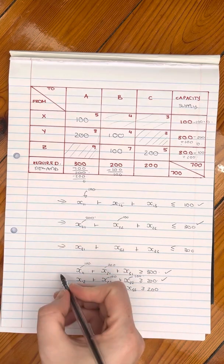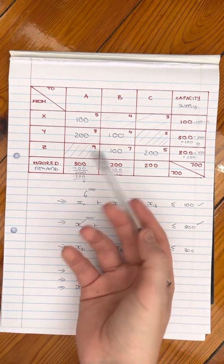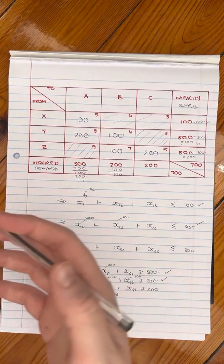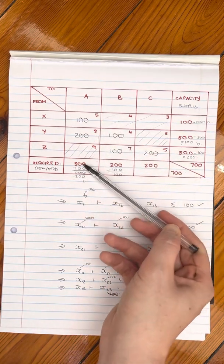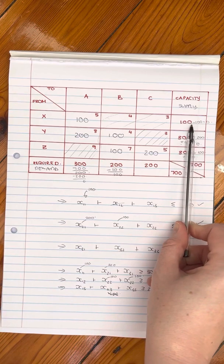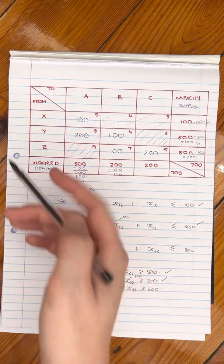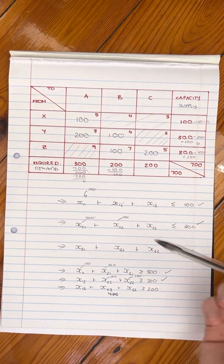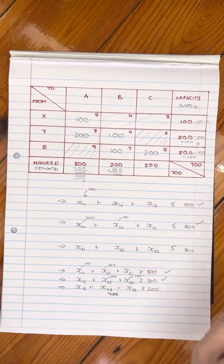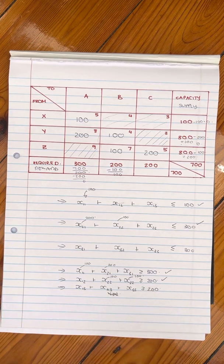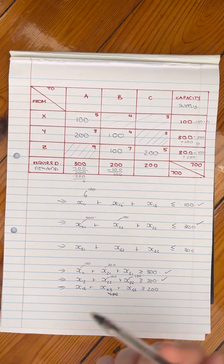Then you subtract that value from your supply and your demand to maintain your constraints, because remember this table is structured to show all the constraints. You scratch out whichever row or column has its constraint met — if you total it up it'll equal 300, or 100 — because you've already sorted that out, and you move to the next northwest corner. A reminder again: we can do this because supply is 700 and demand is 700. If supply and demand are not equal, you have to make changes to your table before applying the northwest corner method.